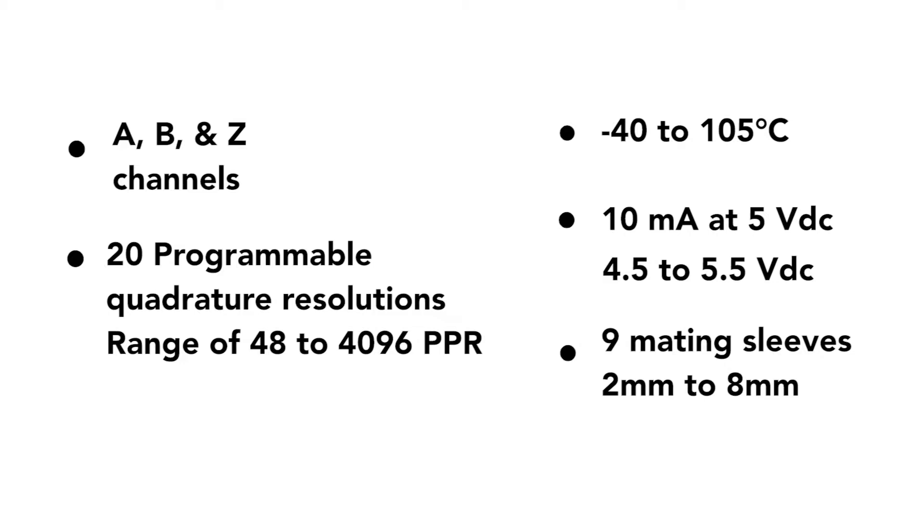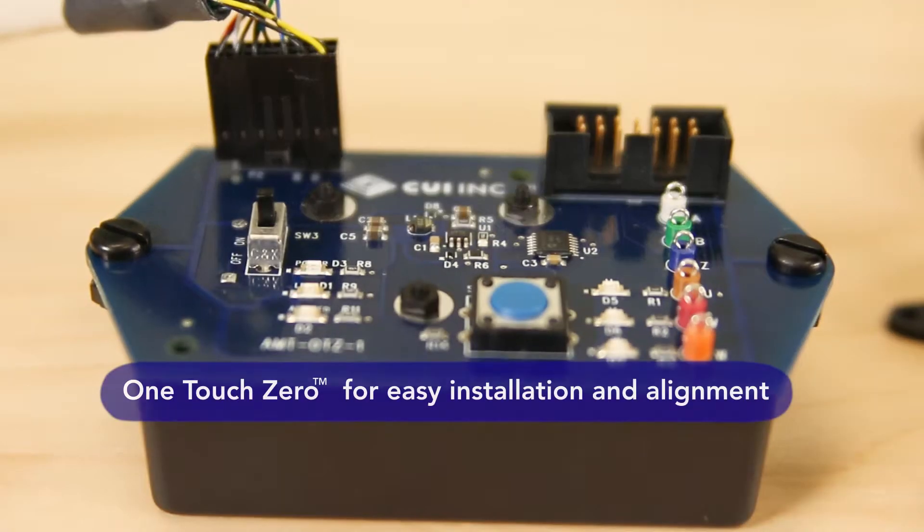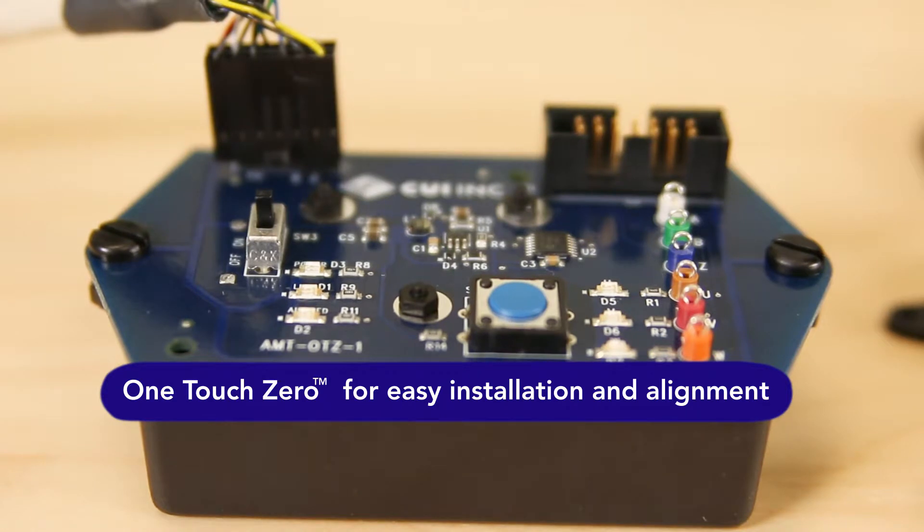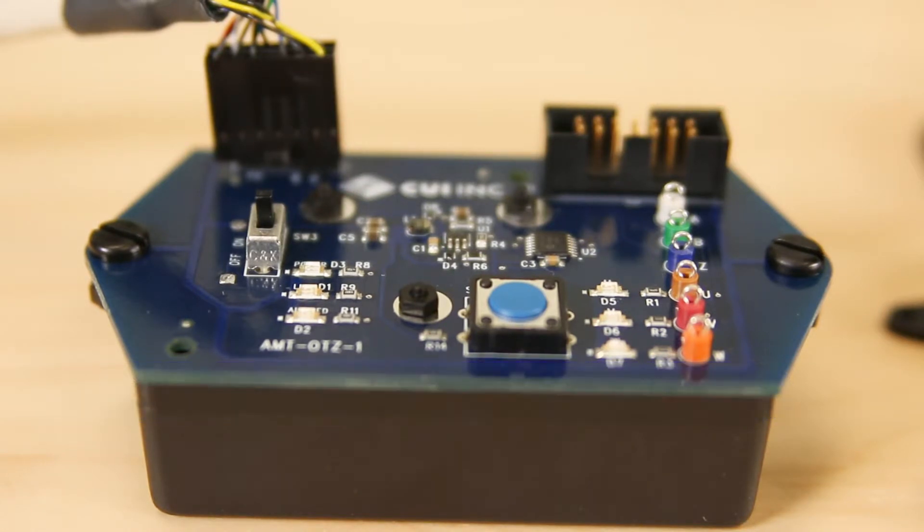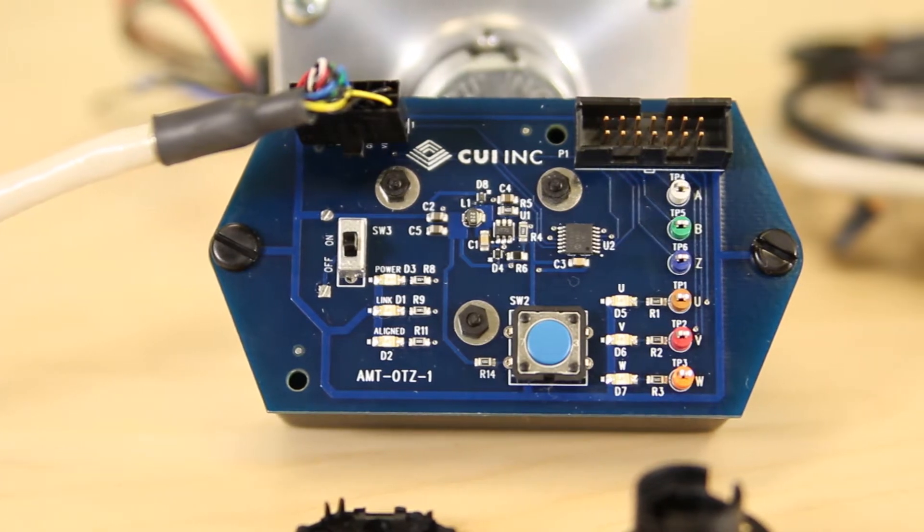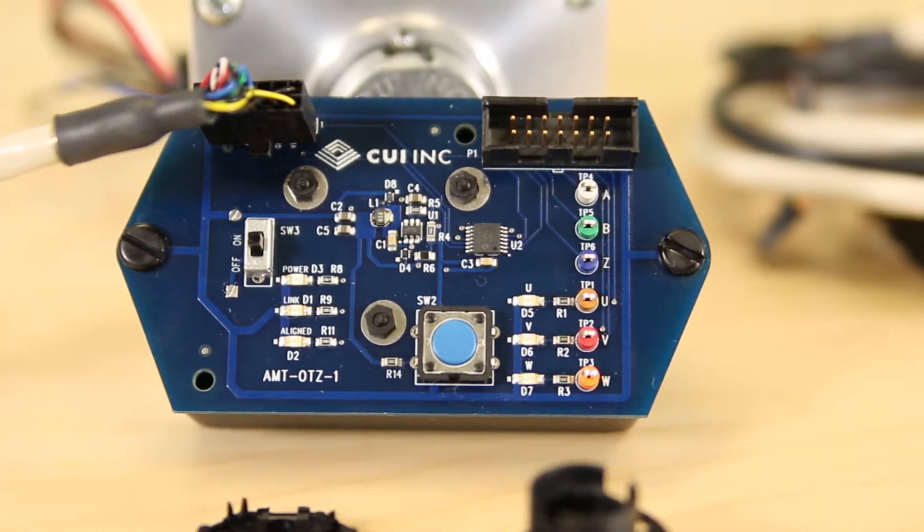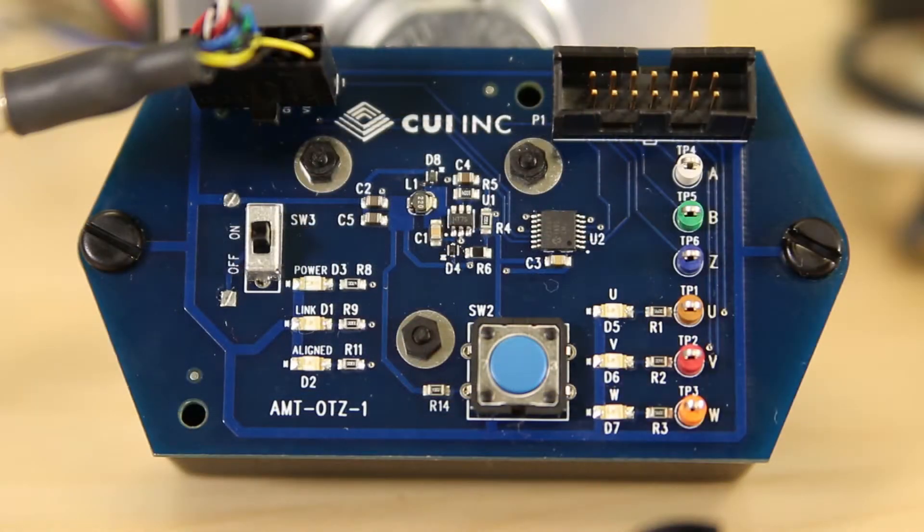20 programmable quadrature resolutions are available with a range of 48 to 4096 PPR. Now let's explore the one-touch-zero function for easy installation and alignment. Thanks to the digital nature of the encoder design, the AMT31 incorporates a one-touch-zero feature to save significant time during motor installation.